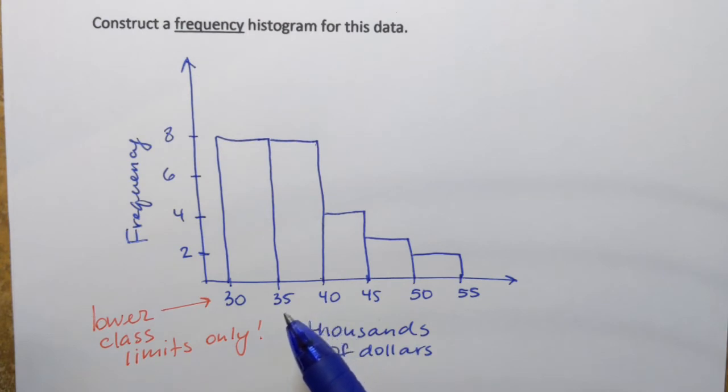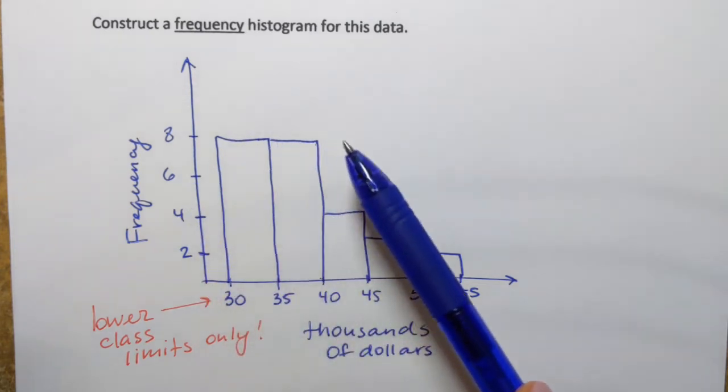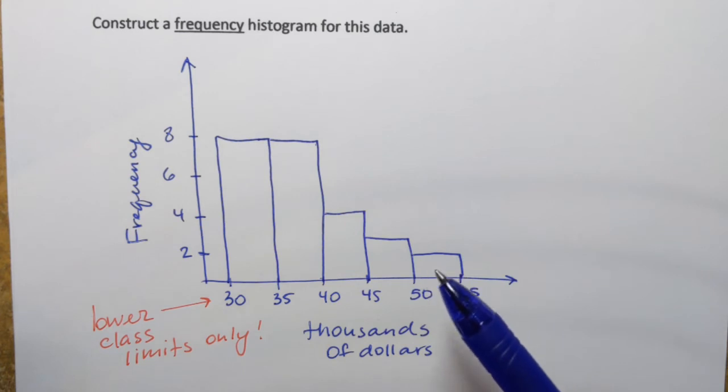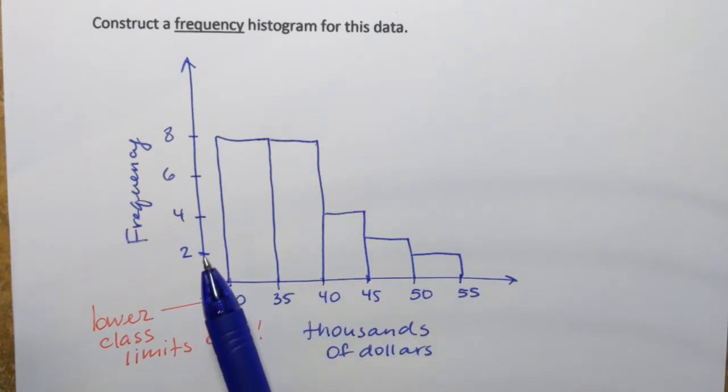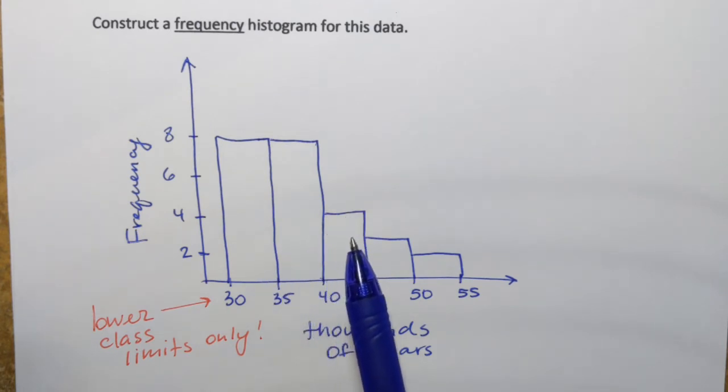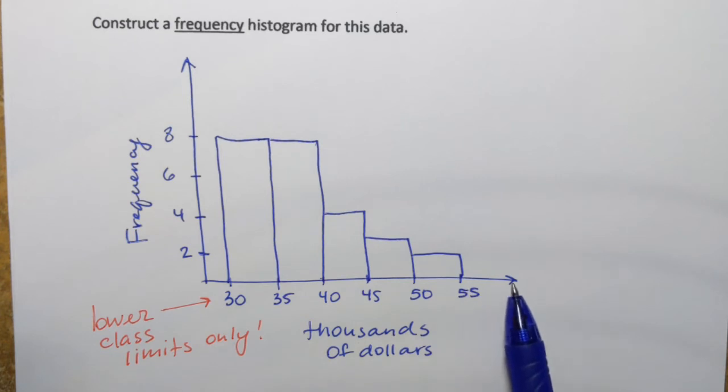So one of the reasons why histograms are so useful is because they can display the shape of the distribution. So we can clearly see that this histogram has a certain shape and we can even like describe it right. We can say that the tallest bars are on the left and then bars are getting smaller and smaller as numbers on the horizontal axis increase.